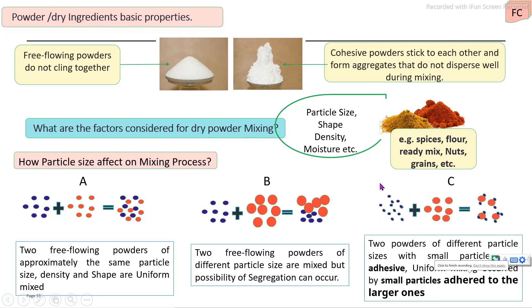In the third case, one ingredient is a smaller, cohesive powder and the second ingredient is a free flowing powder. During the mixing unit operation, the cohesive powder directly attaches to the free flowing powders and uniform mixing is achieved. Particle size, shape, density, and moisture content are the main parameters to consider for mixing dry ingredients.